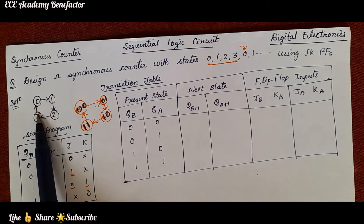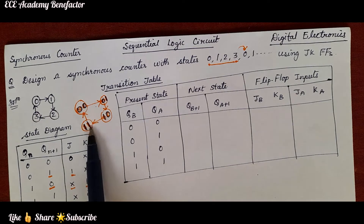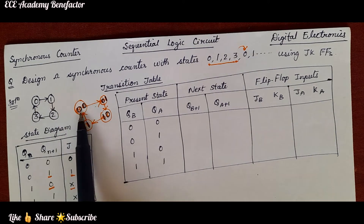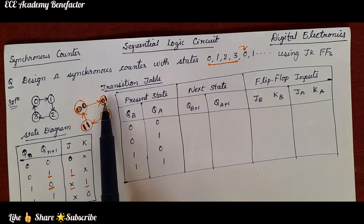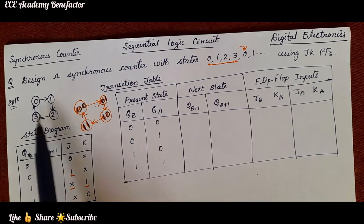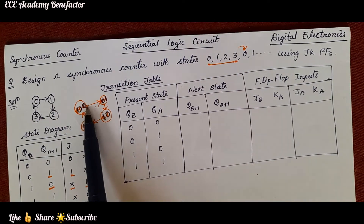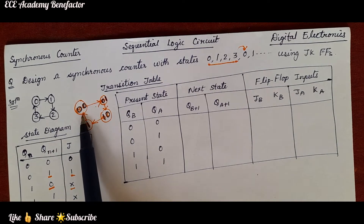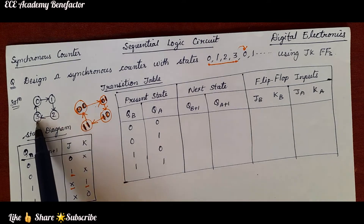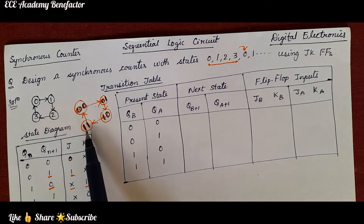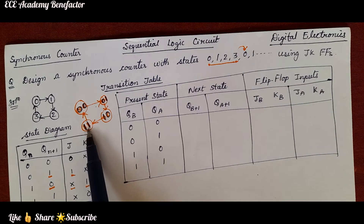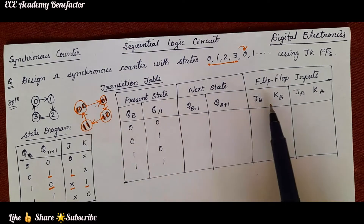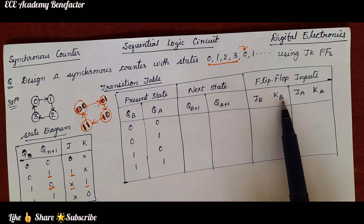We can draw the state diagram in this form or in this form. In this we have used the binary numbers: for 0 it is taken as 00, for 1 it is 01, 2 is 10, and 3 is 11. After 0 it is going to 1, 1 to 2, 2 to 3, and 3 to 0. Here the largest state is 3 and for representing 3 we require 2 bits. So we require 2 flip-flops, taken as JA, KA and JB, KB.